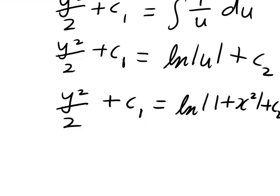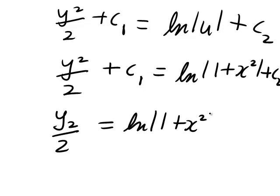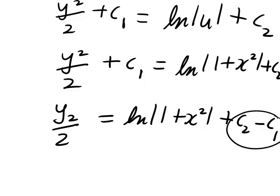And finally, we want to make y the subject. Now a couple of things to note here, we could start by subtracting c₁ from both sides to get ln|1 + x²| plus c₂ minus c₁. But this is just another arbitrary constant, a constant minus a constant, so I'll just rewrite that as c.